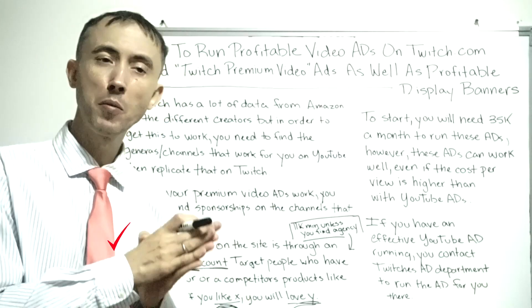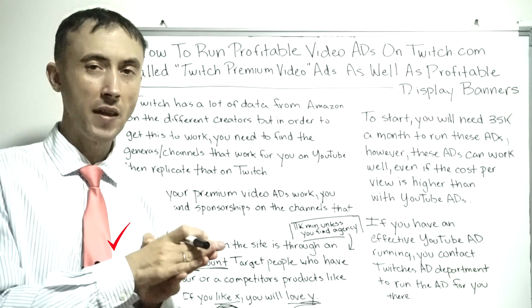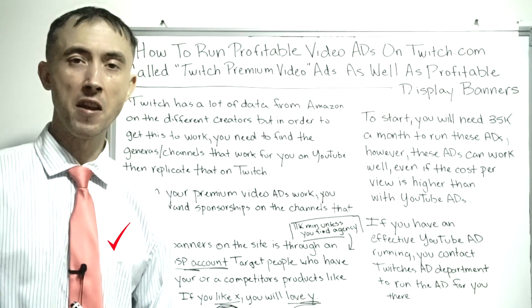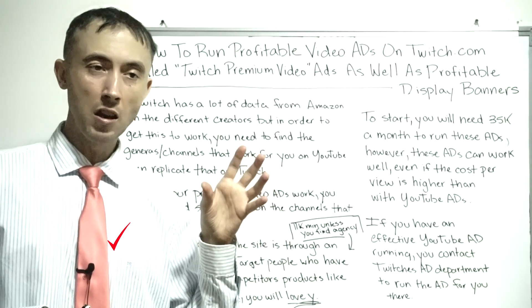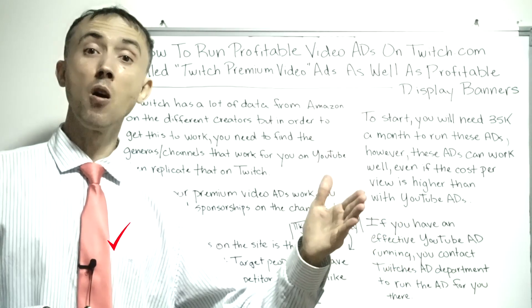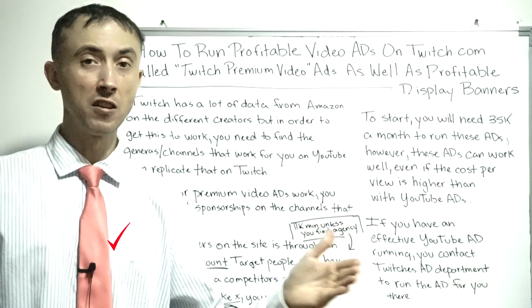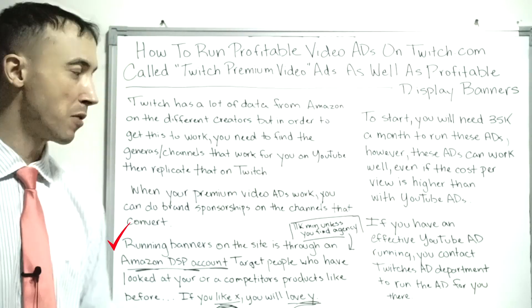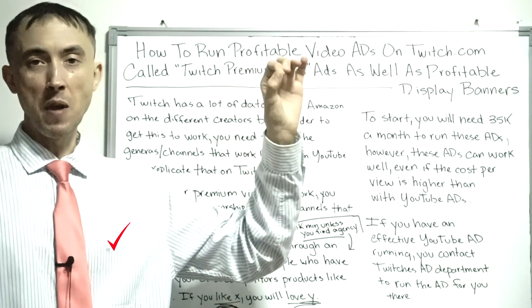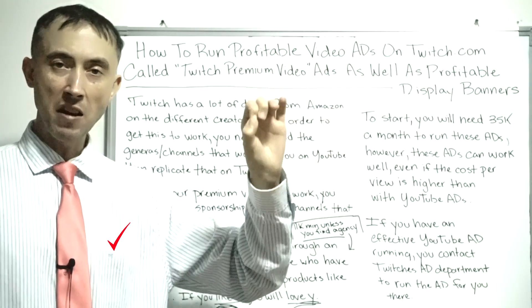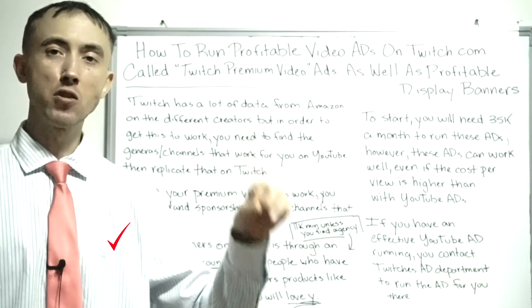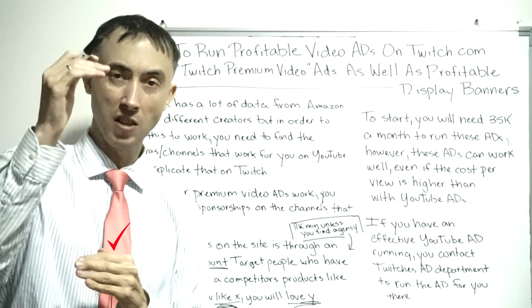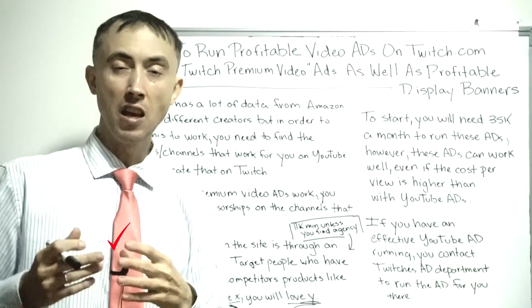You're going to get people to click because they're curious — they want to know about something better than what they were about to buy. Drive them to a landing page that specifically explains why you're better than that direct competitor. You can make money driving them directly to your product on Amazon, but a custom landing page explaining why you're better than the exact competitor that person was considering works two to three times better than just sending them to your product page.